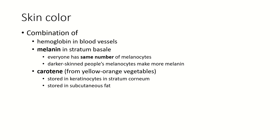If you've ever bought a lipstick that looked really orange or weirdly pink on your skin when it didn't look that way in the store, that's why — your skin has more carotene giving it a yellower or orange tinge, or less carotene giving it more of a pink tinge. Carotene tends to be stored in the subcutaneous fat, and if you eat a lot of yellow and orange vegetables, you could actually make your skin turn orange.